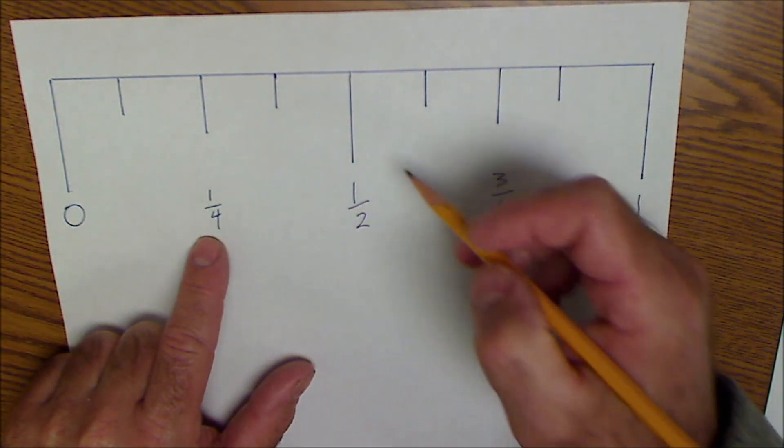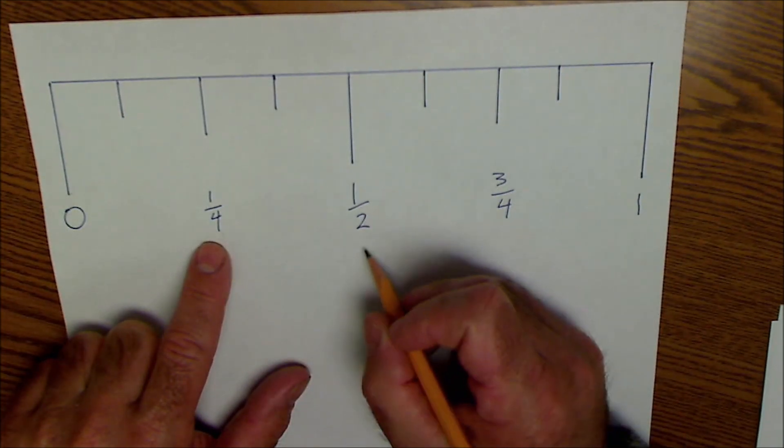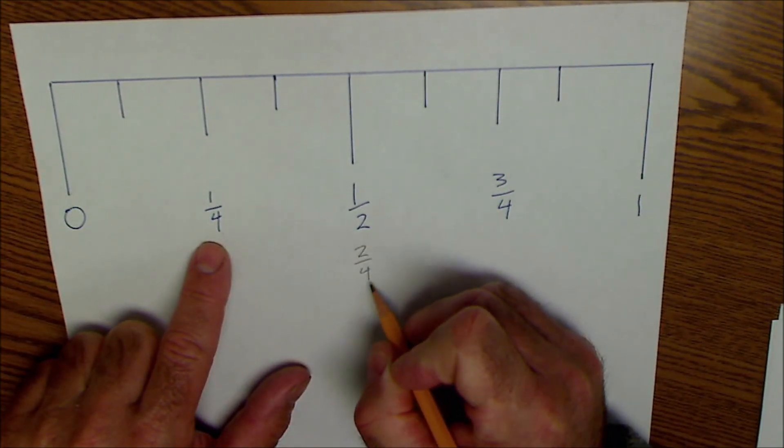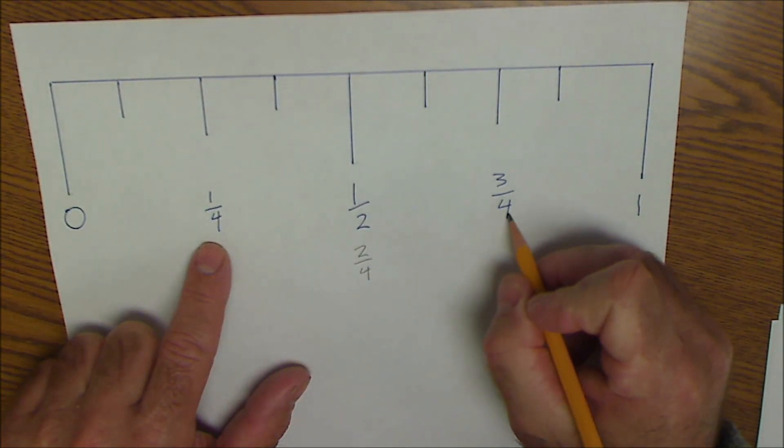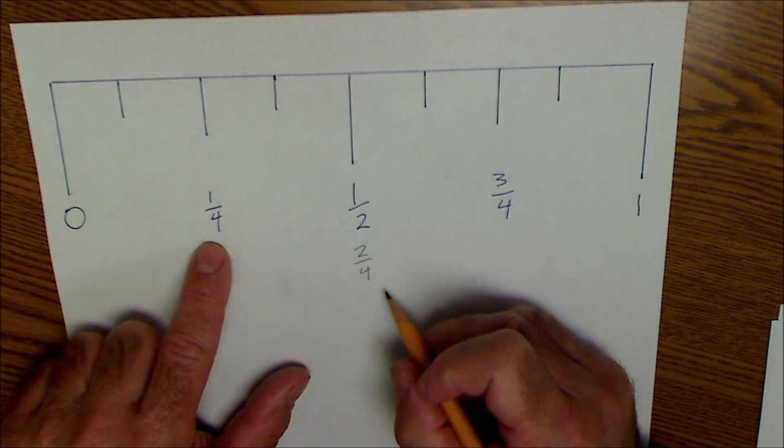You cut that in half to get your quarter inch marks. So this line is shorter than this. So here's one quarter, this would be two quarters, and then this would be three quarters, with a common denominator.